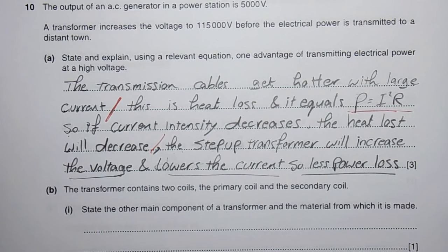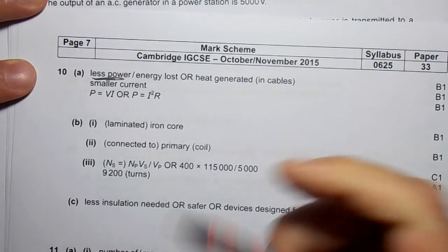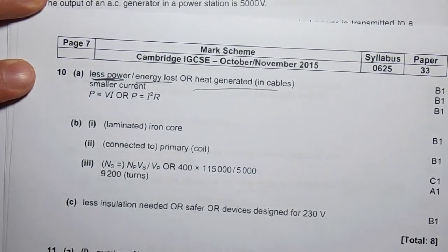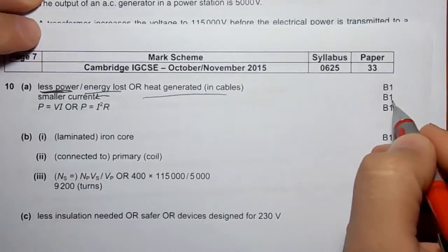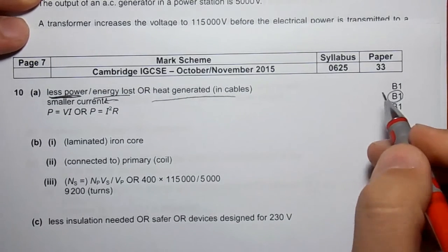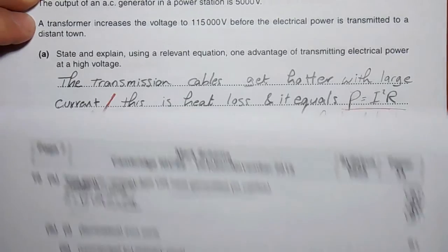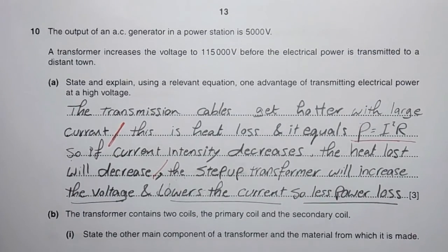The question needs three marks. Let's check the mark scheme. He gives one mark for less power or energy lost or heat generated in cables. We said that. We need smaller current - that's the second mark. And we said it. P equals I square R or P equals IV - we said it. I think our answer deserves the full 3 marks.